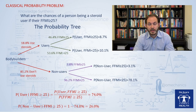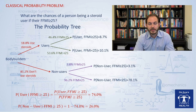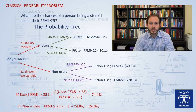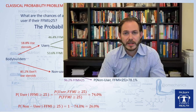Now we are ready to answer the question: what is the chance of a person being a steroid user given that their FFMI is higher than 25? We take the joint probabilities already calculated in the tree and put them into the formula shown below. Based on the data from these two articles placed into the probability tree and formula, we can say that someone is 74% likely to be a steroid user if their FFMI is higher than 25. Reversing it: if someone's FFMI is 25 or higher, their chances of not being a steroid user are approximately 26%. A 26% chance of not being a steroid user is a pretty high number, and we should not accuse anyone of using steroids just because their FFMI is 25.